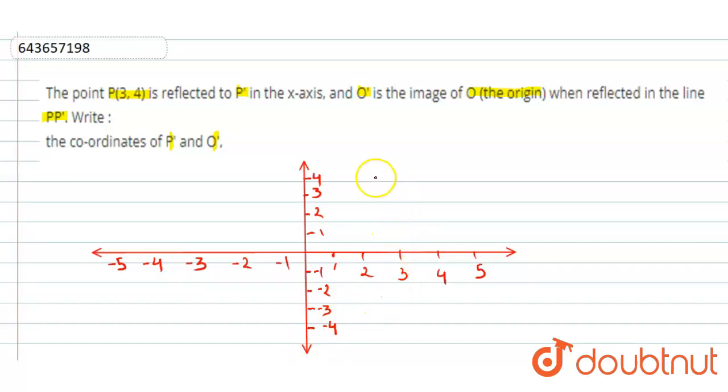Now we define P as (3,4). On the y-axis it is 4, on the x-axis it is 3. So we can say that this point is (3,4). This is P. And O is at the origin, so that's (0,0). This is O.